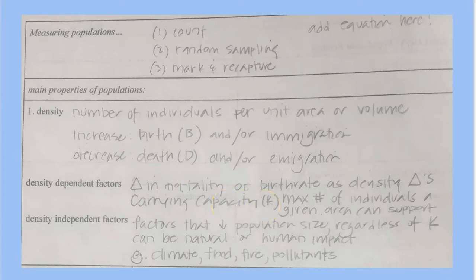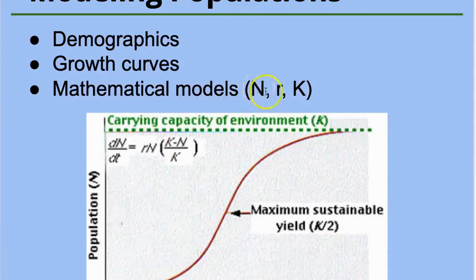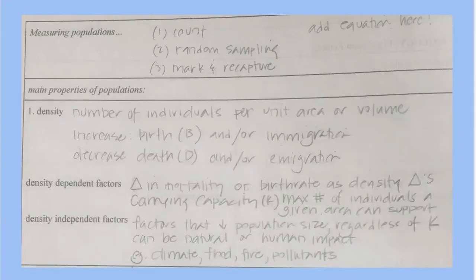we use the symbol K to designate carrying capacity. And it just refers to the maximum number of individuals a given area can support. So carrying capacity, you can think of it as a particular habitat. That's the available resources that can support a particular organism.